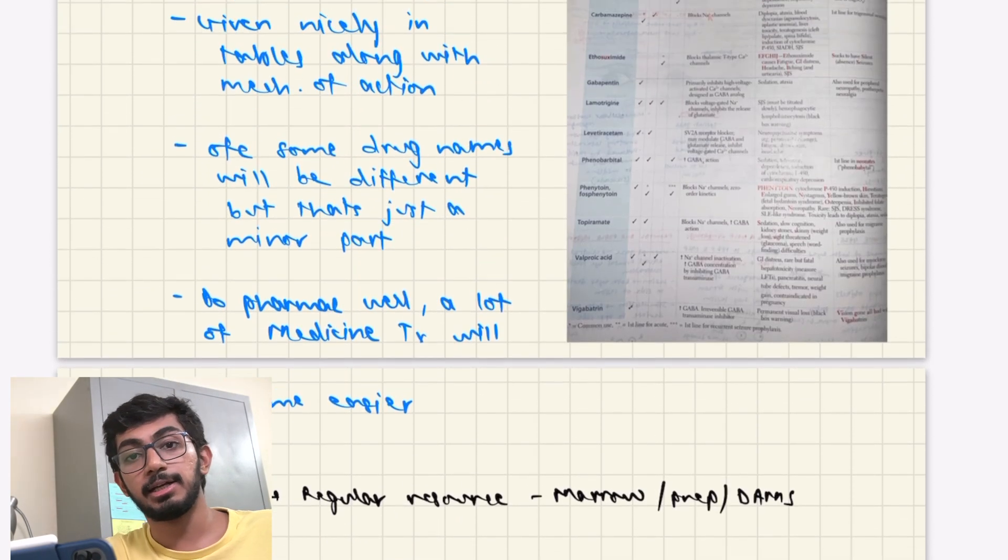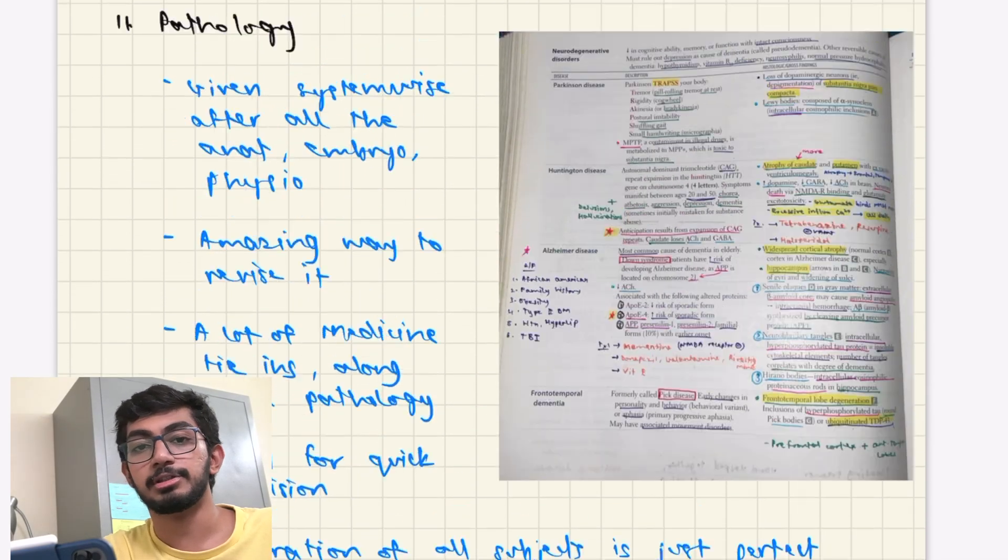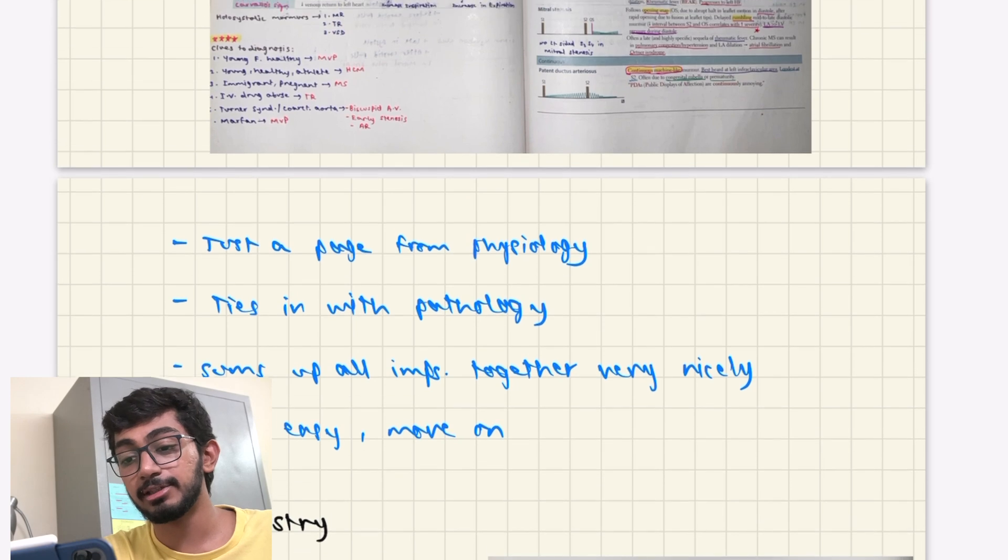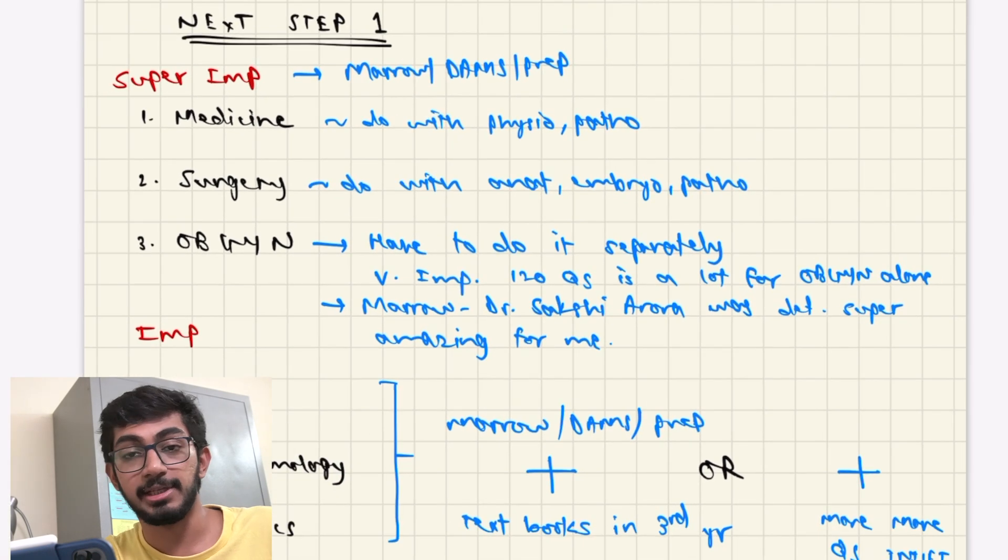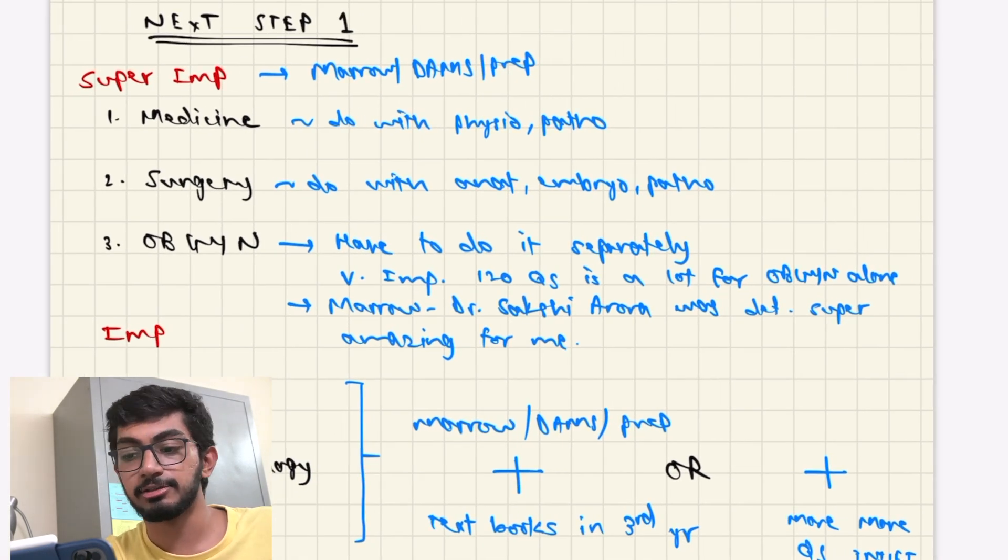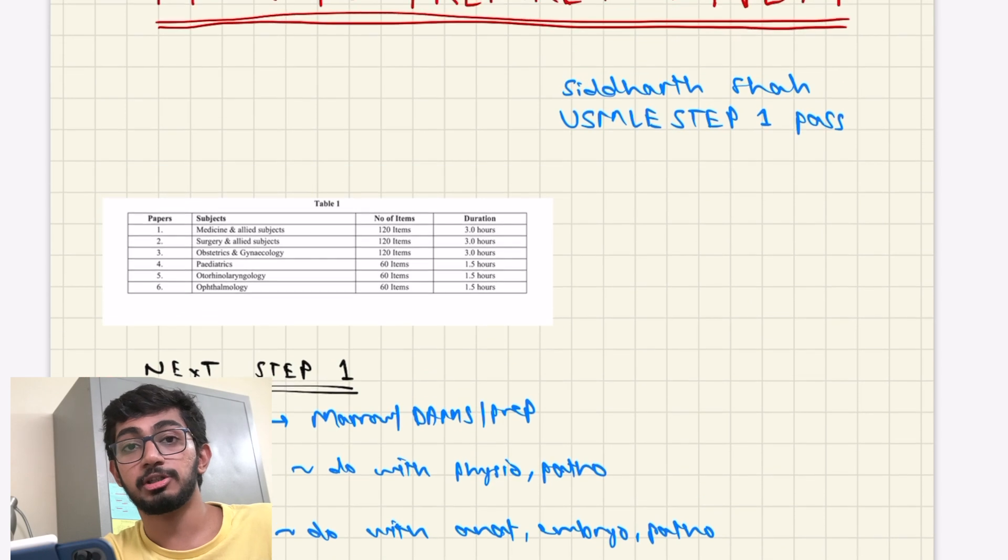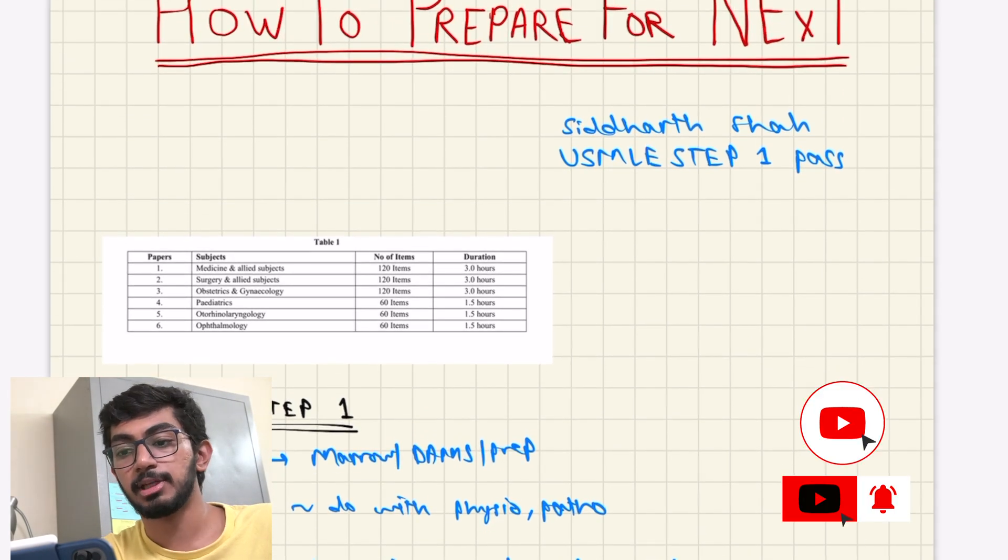So yeah, I think this is my two cents on how to prepare for the NEET Step 1 exam. And I've covered the 10% part of the first and second year and also the 10% PSM part. The rest of it has to be done from your regular sources like Marrow, Dams or Prep Ladder that you've been using. And solve more and more INICAD questions and clinical knowledge. Don't worry much about the exam right now. We'll get to know more about how the questions are being asked and what type of questions are being asked after the mock exam. So till then just focus on studying and keep doing your best.